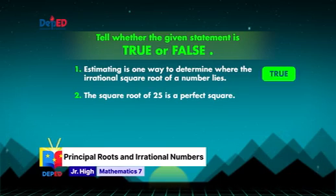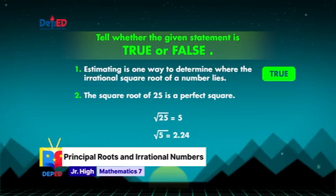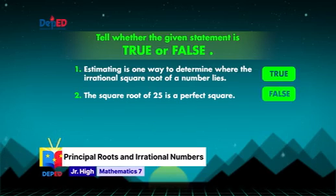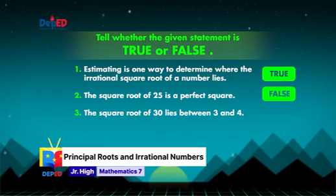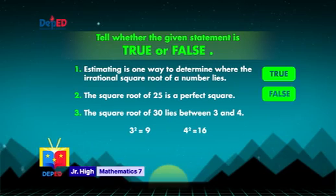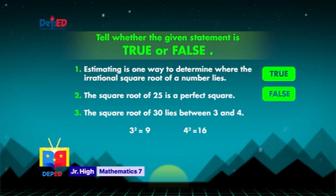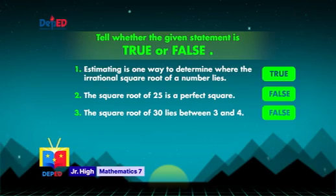Number 3: the square root of 30 lies between 3 and 4. Since 3 squared is 9 and 4 squared is 16, and 30 does not fall between 9 and 16, its square root is not between 3 and 4. So the answer is False!